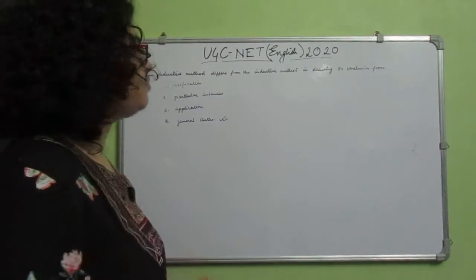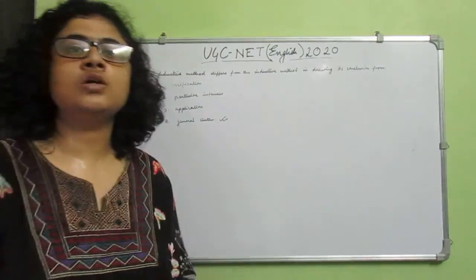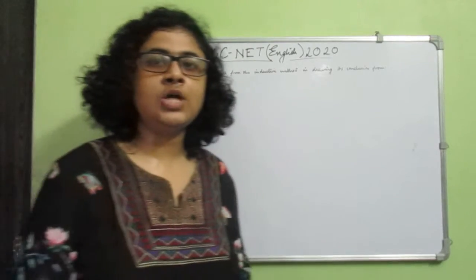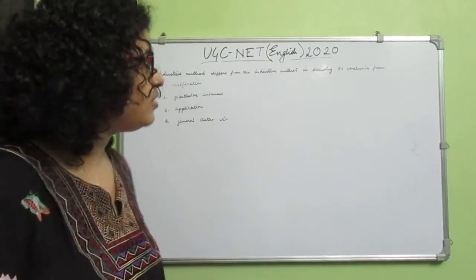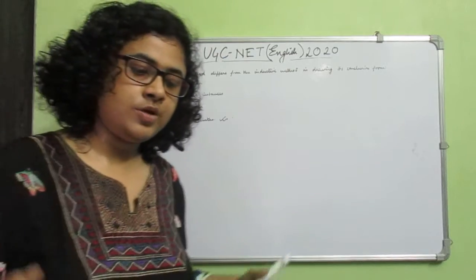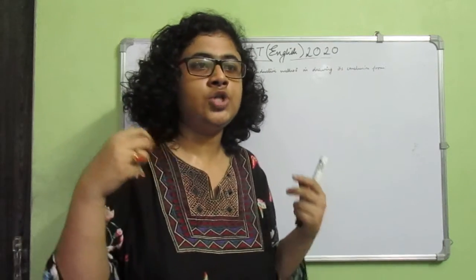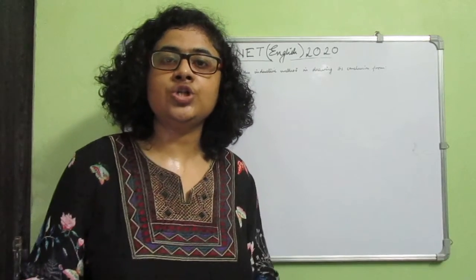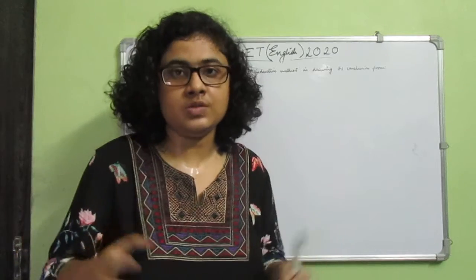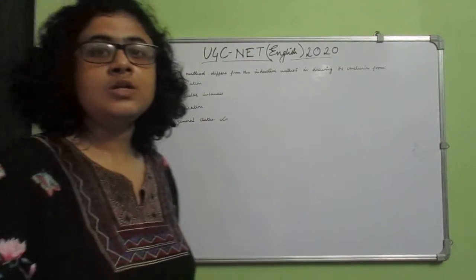In the deductive method, we work our way downwards. We collect all fundamental resources and data, arrange them according to the research, and work downwards to reach a conclusion. In the inductive method, we work upwards — we start with the general truth as the conclusion and work upwards through data and resources that constitute that general truth. Therefore, option number 4, General truths, is the correct answer.